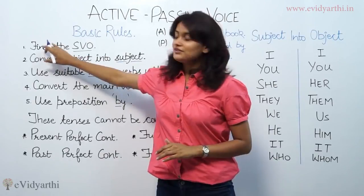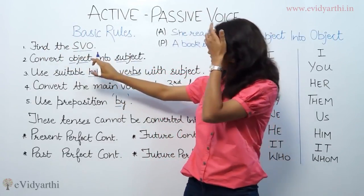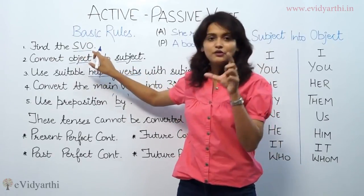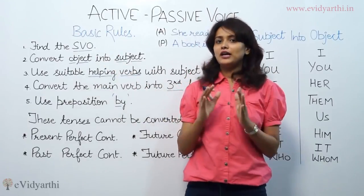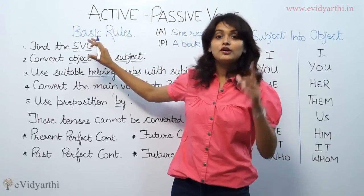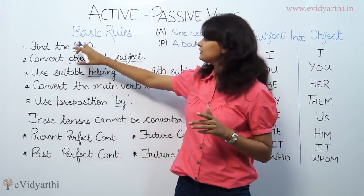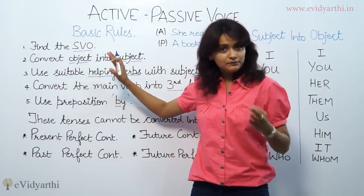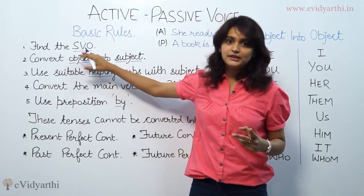First, I have mentioned: find the S, V, O — which is a short form for Subject, Verb, and Object. When a sentence happens in English and we are going to turn it from active to passive, the first step is that we identify the subject, verb, and object.